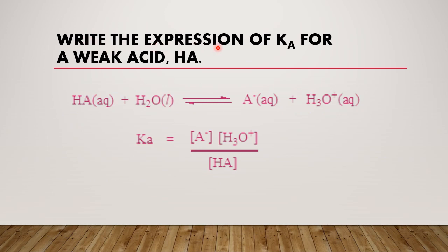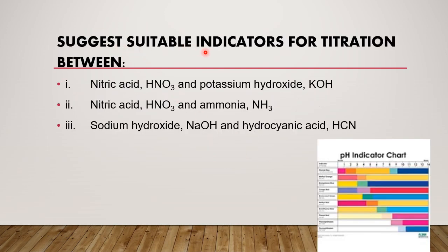Write the expression of Ka for a weak acid. First of all you must write now the weak acid, HA, in water, and then it's a reversible reaction forming A negative anion and hydronium ion H3O plus. So when we write down the Ka expression, the concept is still exactly same as Kc: product over reactant, ignore liquid, ignore solid. That's why there is only one reactant for this equation. So concentration A negative ion times concentration H3O plus ion over the concentration of HA. So this is the Ka expression for HA.